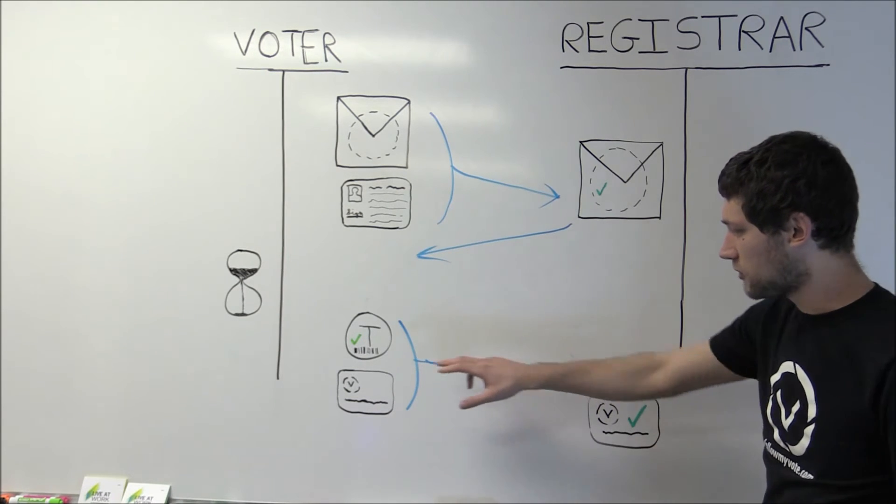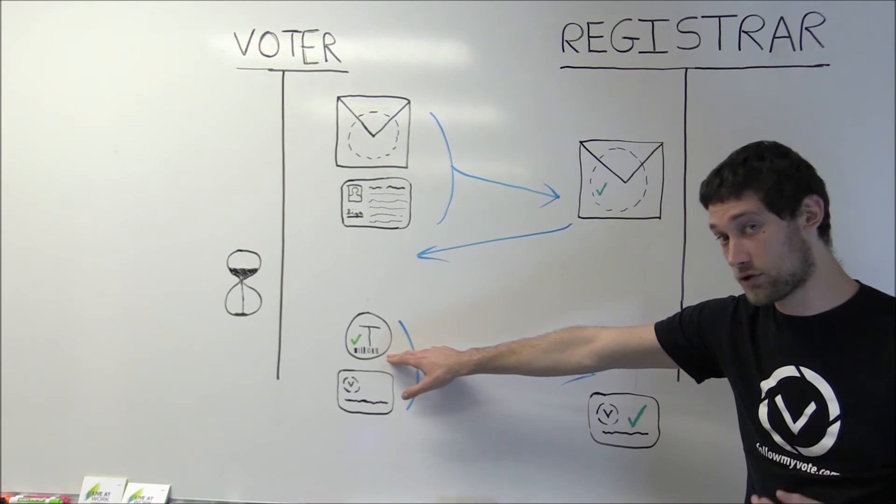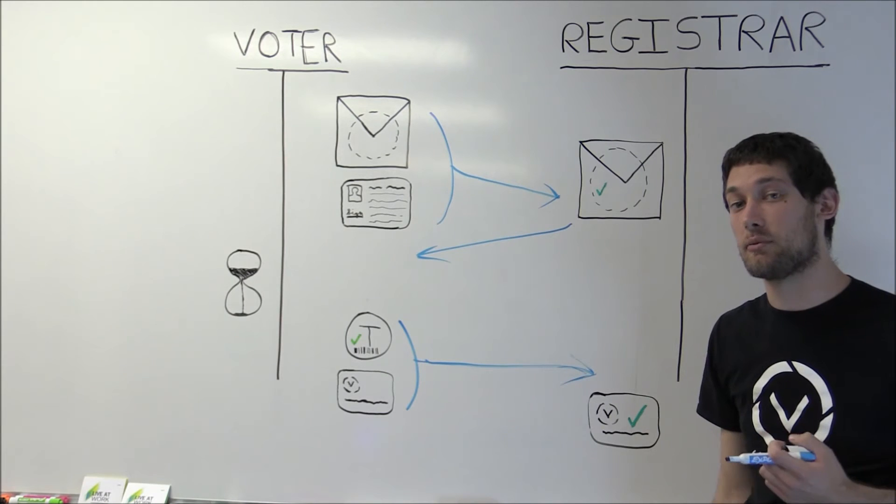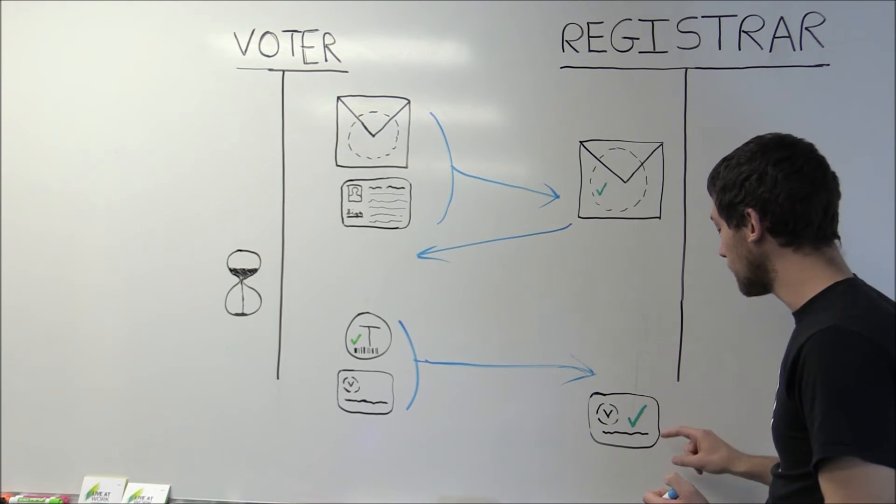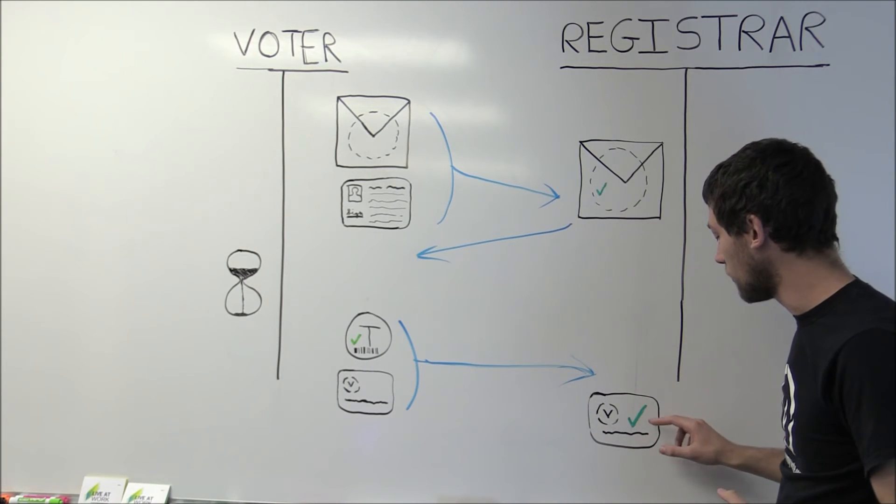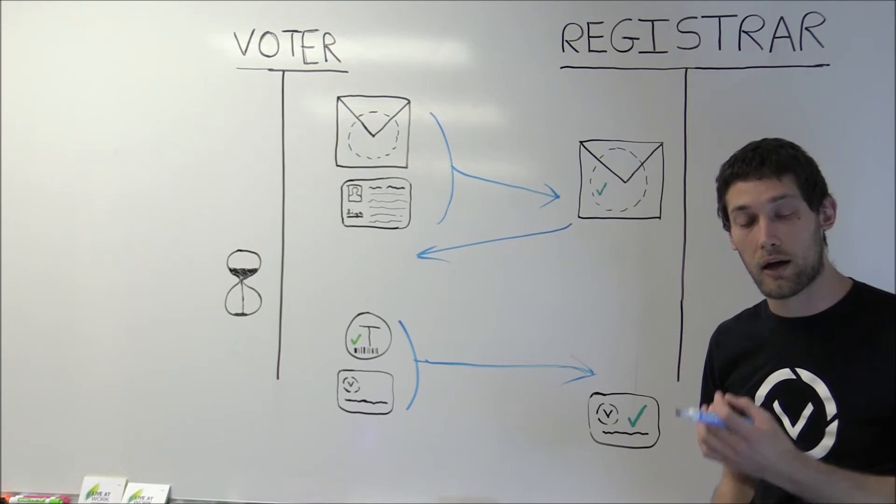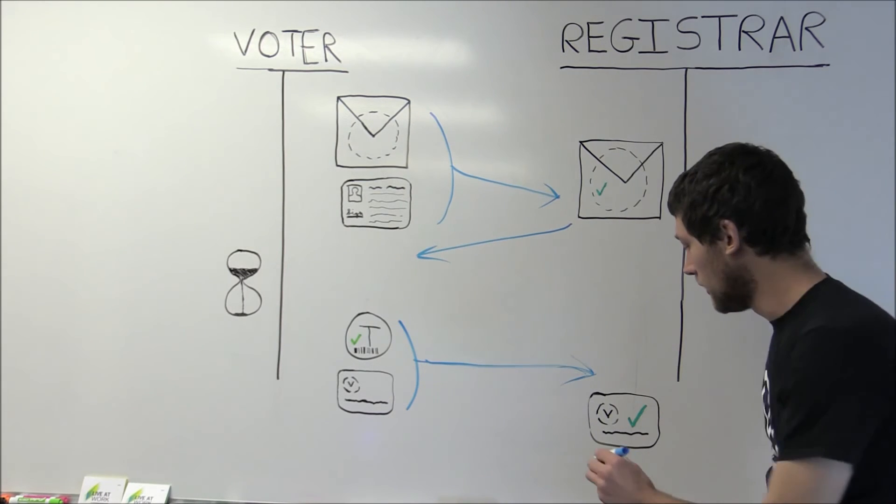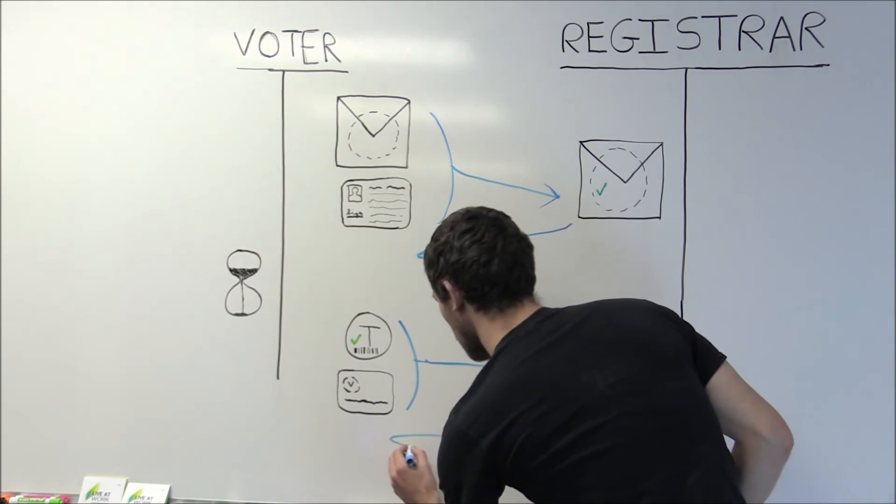The registrar first checks to make sure that this is the first time that he's ever seen this unblinded token, and if so, then he signs off on the voter ID, certifying it as unique and authorized to vote. He returns this to the voter.